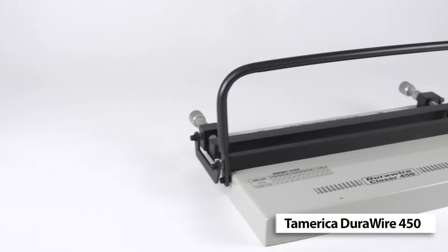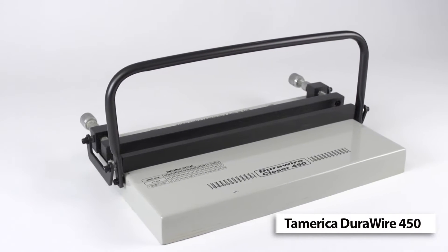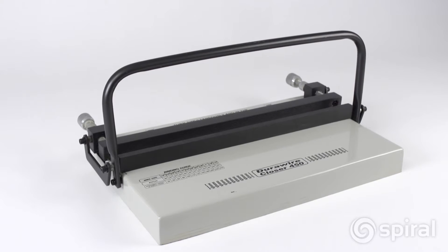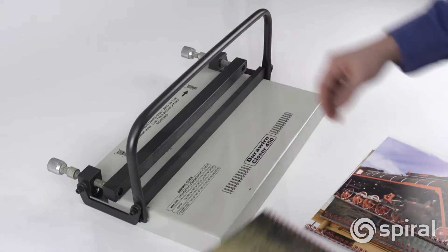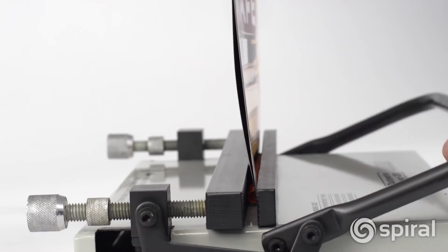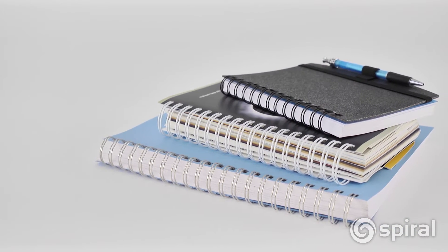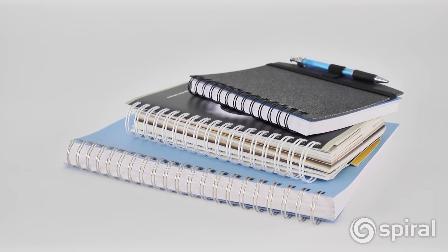The DuraWire 450 Closer is a heavy-duty manual wire closer that allows you to easily close all standard binding wires from 3/16" up to 1-1/4" in diameter. It will close 3 to 1 and 2 to 1 pitch Wire-O as well as 19-hole Spiral-O wire.